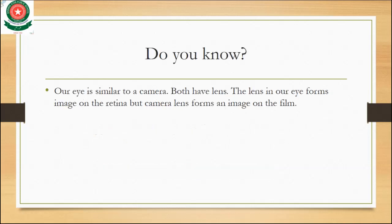Do you know that our eye is similar to a camera? Both have a lens. The lens in our eye forms an image on the retina, but in a camera, the lens forms an image on the film. So both the eye and the camera have a lens, but the eye lens forms an image on the retina, while the camera forms the image on the film.